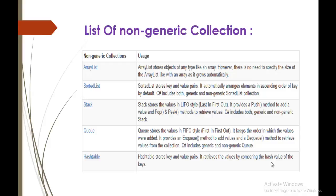Non-generic collections include ArrayList, SortedList, Stack, Queue, and HashTable. In this session we are going to concentrate only on ArrayList. ArrayList stores objects of any type like an array, but with a key advantage: unlike a typed array where you can only store integers, strings, or other specific types, ArrayList can store any type of value.